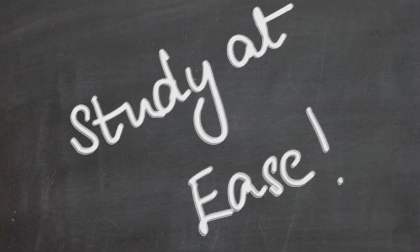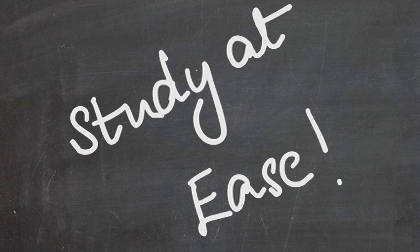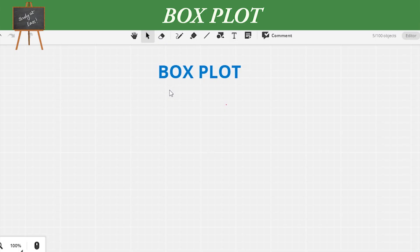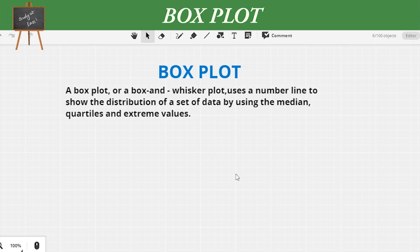Hello everyone, welcome to my channel Study at Ease. I hope everyone is safe. Today we're going to study the topic box plot. A box plot or a box-and-whisker plot uses a number line to show the distribution of a set of data by using the median, quartiles, and extreme values.